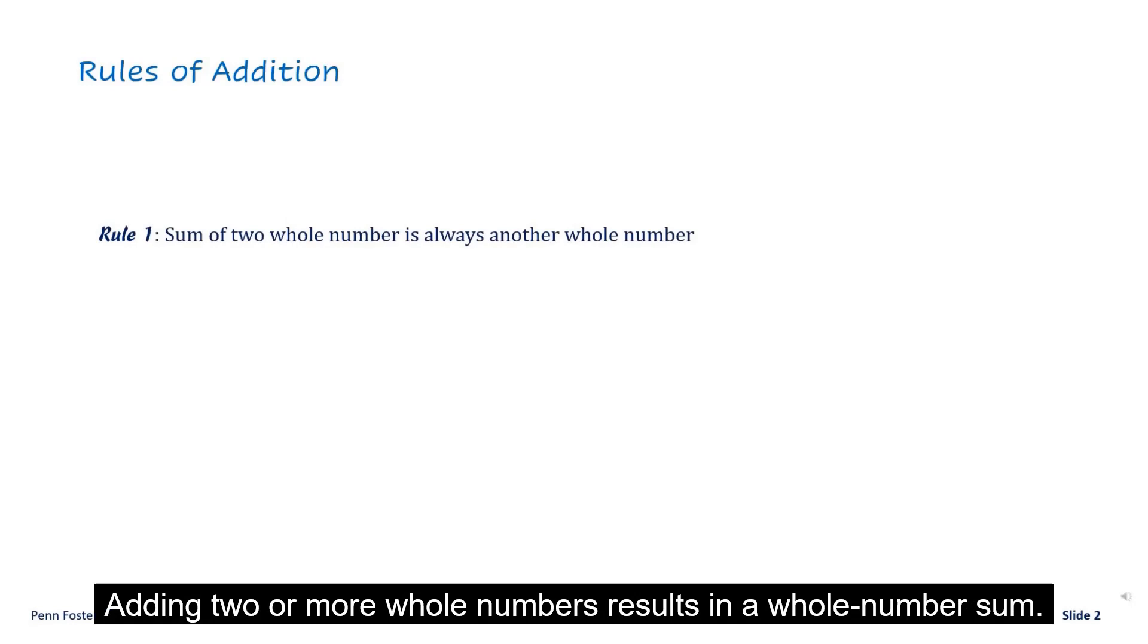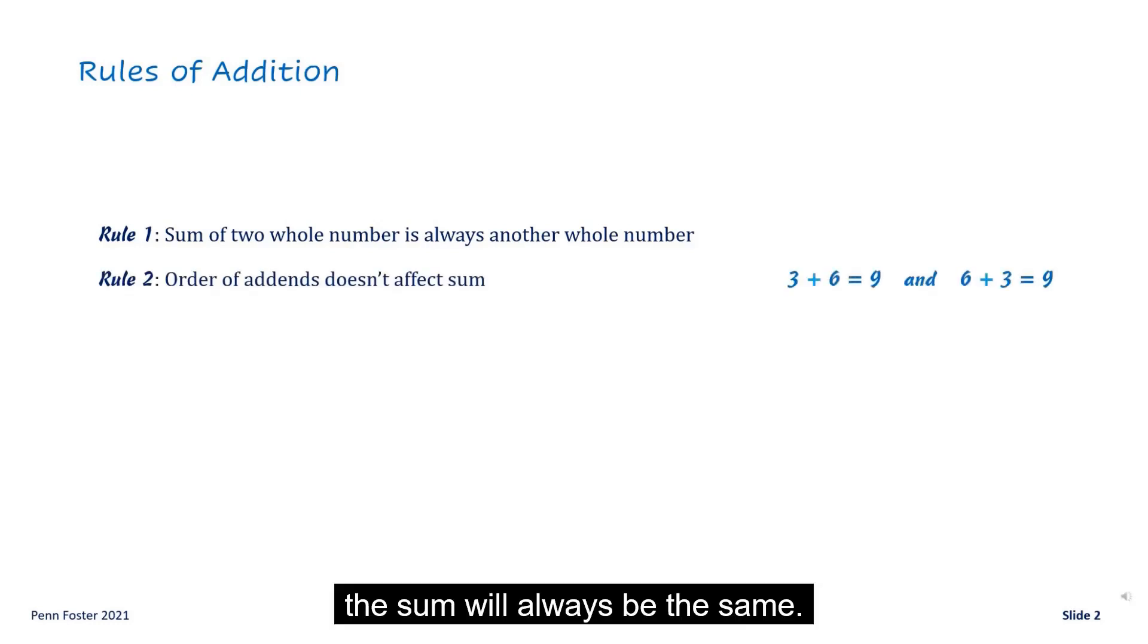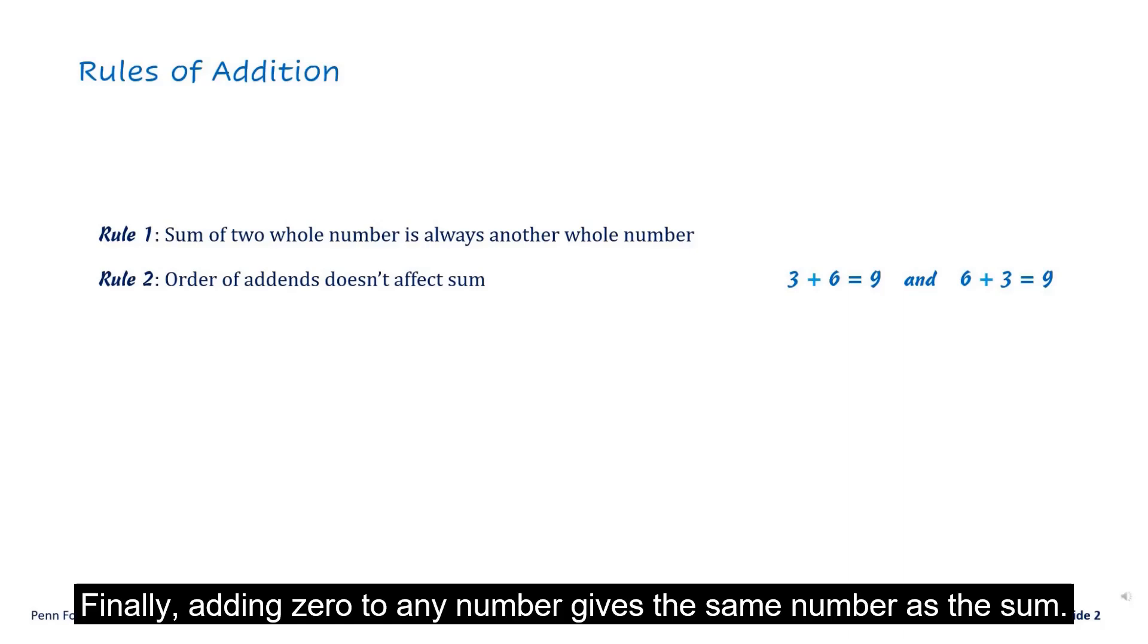Performing addition follows a few common sense rules. Adding two or more whole numbers results in a whole number sum. The order in which numbers are added doesn't matter. The sum will always be the same. Finally, adding zero to any number gives the same number as the sum.